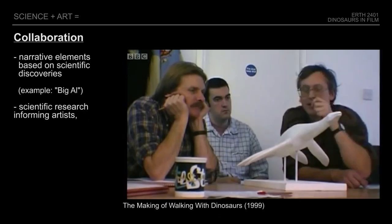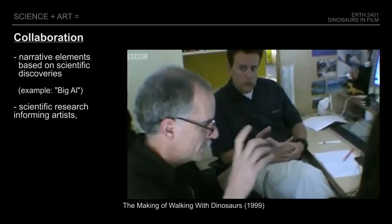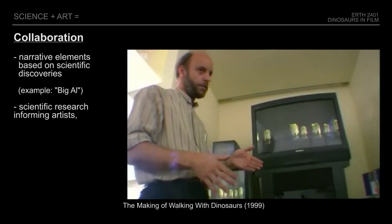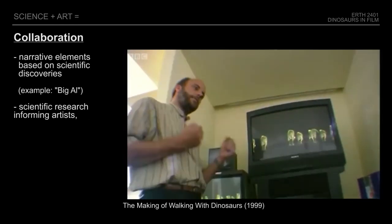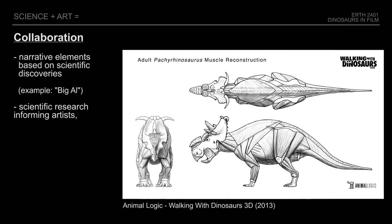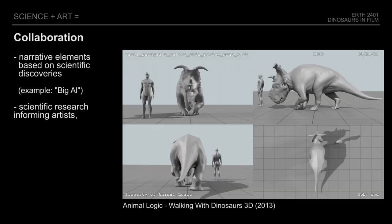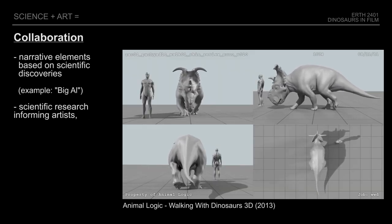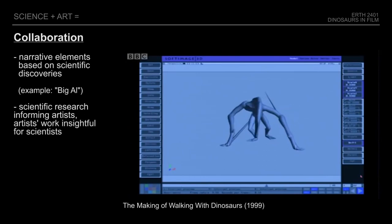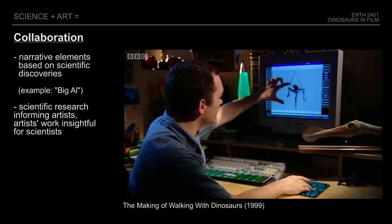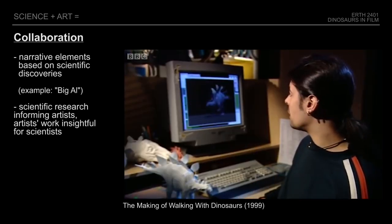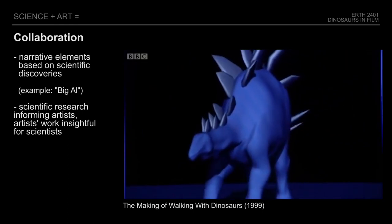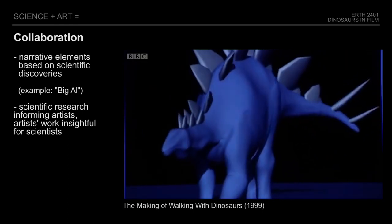With the increasing complexity and realism required, digital artists benefit greatly from the active research and expertise that scientists can offer, as any knowledge into the dinosaur's anatomy will aid in constructing the digital character, and theories on behavior or potential limitations may inform the animation process. Whereas in return, science can benefit from the artistic work visualizing said research in a more widely accessible medium, and gain new insight from the challenges that artists had to overcome, which is said to have occurred multiple times across various productions.